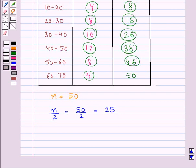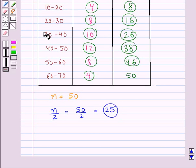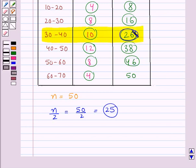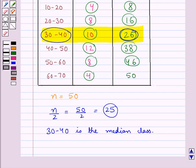So the class having the cumulative frequency greater than and nearest to 25 would be the median class. Now, from this table we find that the class 30 to 40 has the cumulative frequency 26, which is greater than n/2, that is 25. So 30 to 40 is the median class.